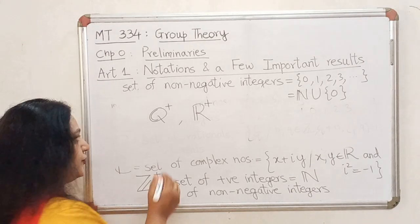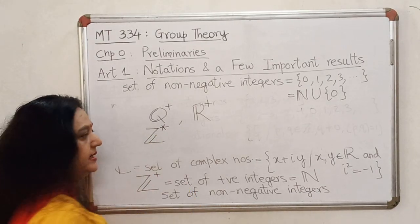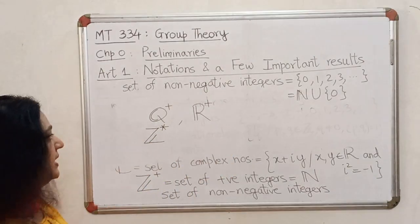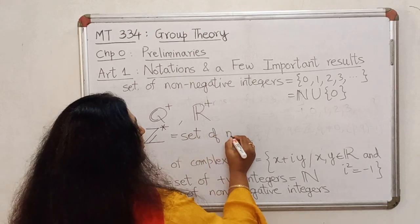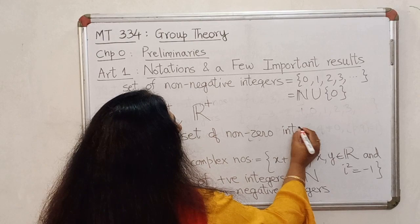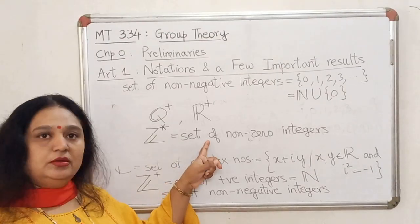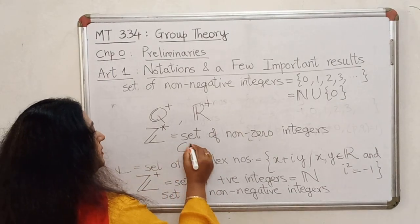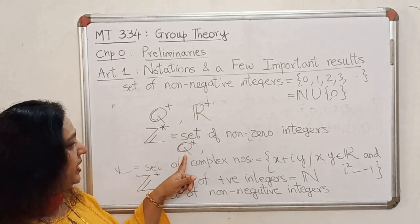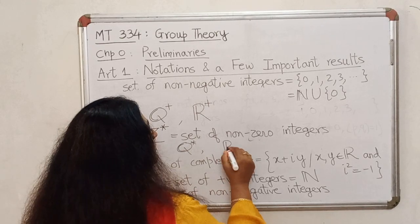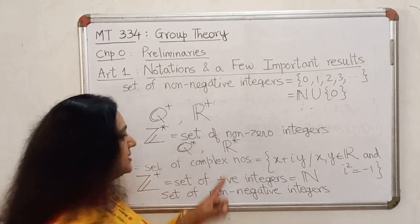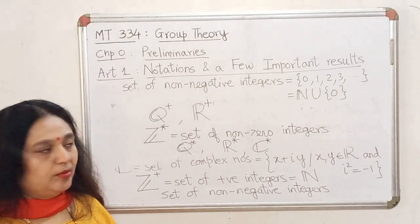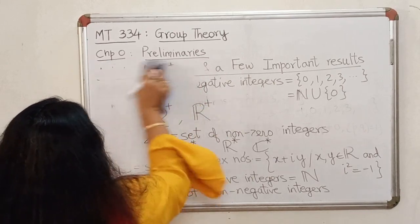There is another notation that will be very useful to us. And that is Z star. So when I use a superscript star, this will denote the non-zero elements from this set. So if it is Z star, this will be set of non-zero integers. So other than 0, you put all your remaining integers over here. We will have all the positive integers as well as the negative integers. Just like that, we can also define Q star, the set of non-zero rational numbers. You can have R star, the set of non-zero real numbers. And C star will be the set of non-zero complex numbers. So that's as far as the notations are concerned.